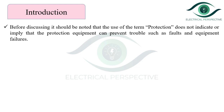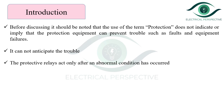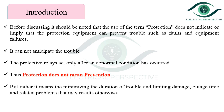Before discussing the actual topic, it should be noted that the use of the term 'protection' does not indicate that protection equipment can prevent trouble such as faults and equipment failures. It cannot anticipate trouble. The protective relays act only after an abnormal condition has occurred. Thus, protection does not mean prevention, but rather minimizing the duration of trouble and limiting damage, outage time, and relay times that may result otherwise.